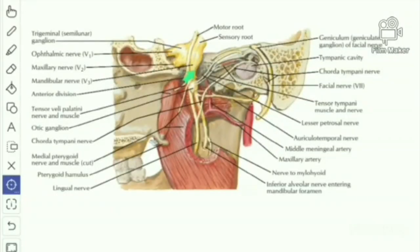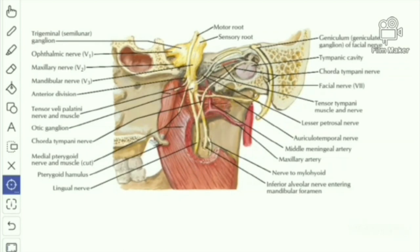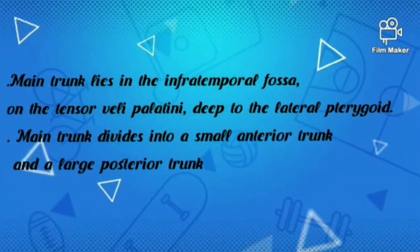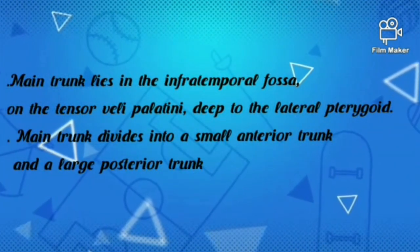In this picture we can see the sensory root and motor root of the mandibular nerve. Both roots pass through the foramen ovale, and just below the foramen ovale in the infratemporal fossa, the two roots join to form the main trunk of the mandibular nerve. This trunk intervenes between the tensor veli palatini medially and the lateral pterygoid muscle laterally.